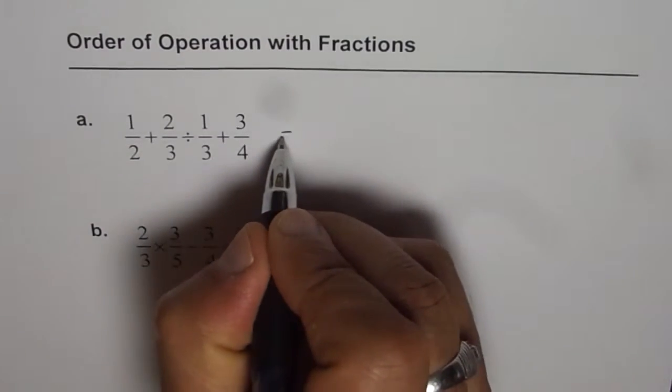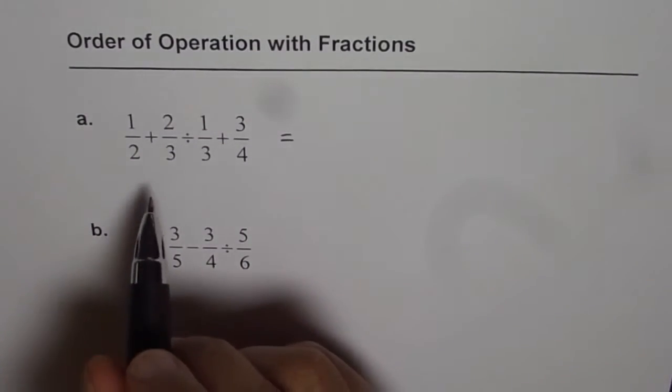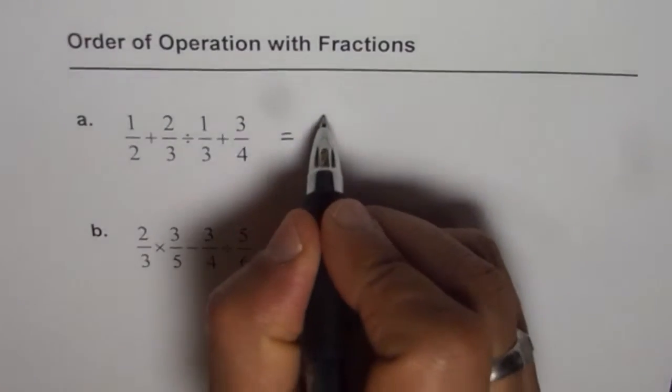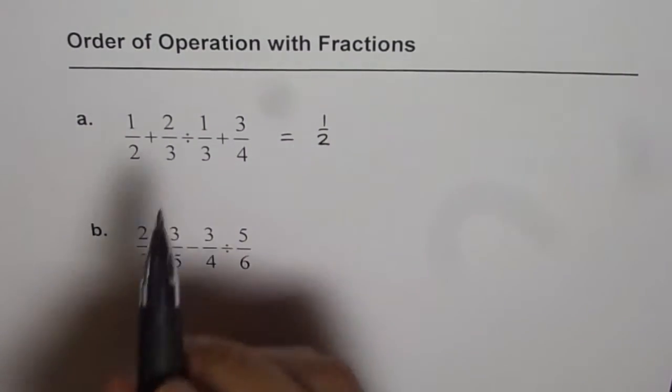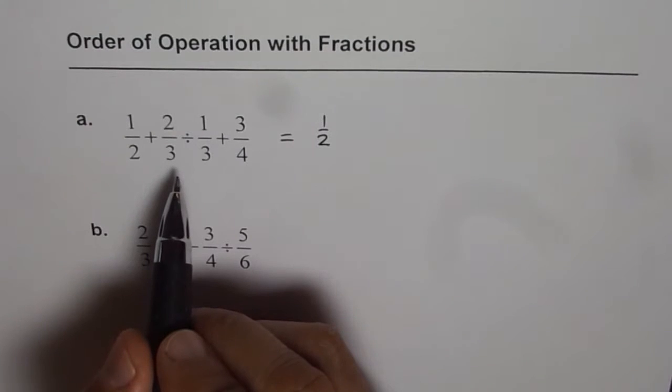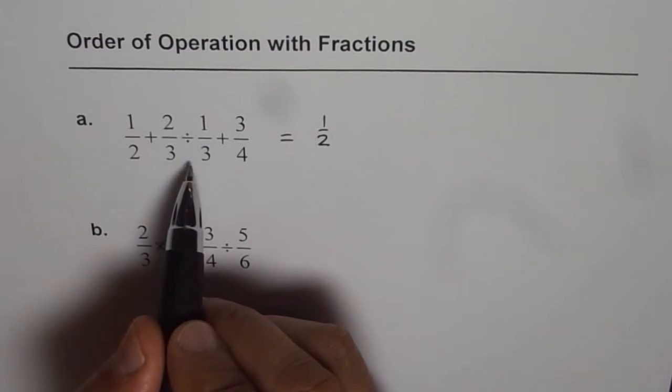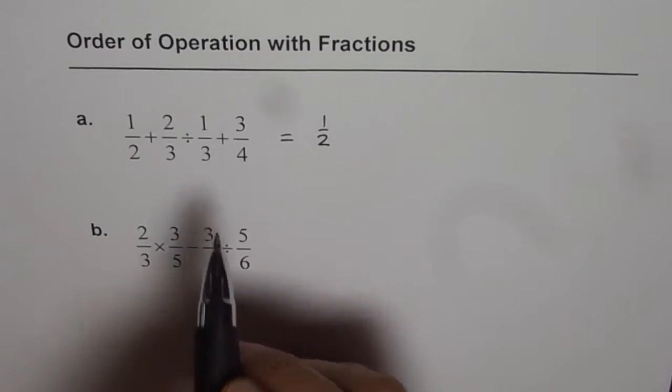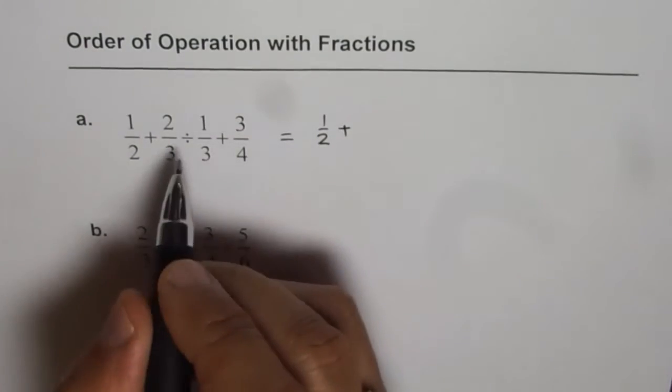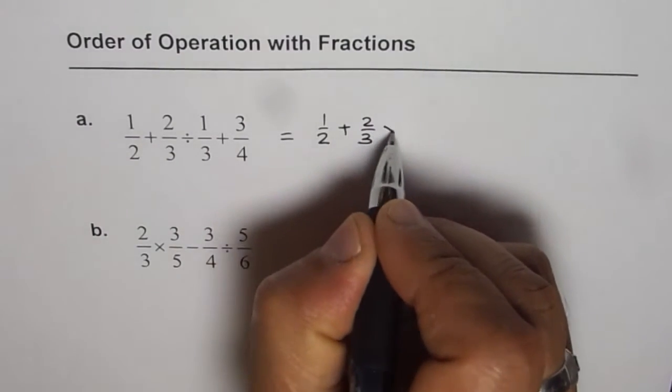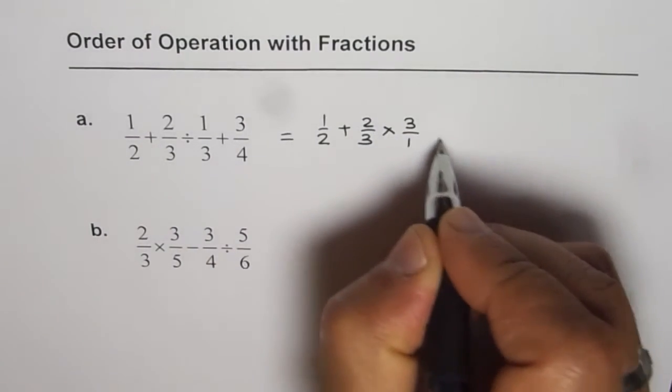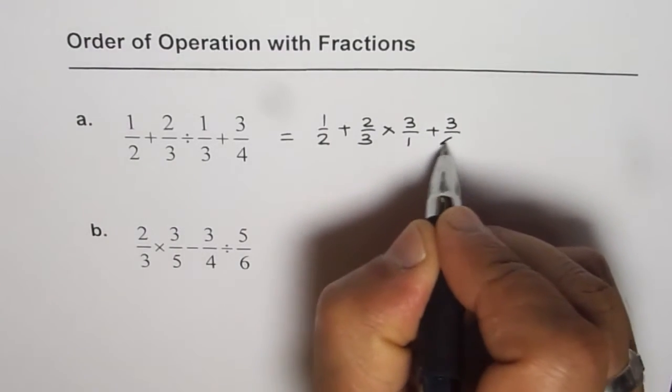We can always rearrange them. So let's rearrange like half. What we will do instead is write division as multiplication, perform the multiple operation in the center and then add all of them. We have half plus we can write this as two over three times three over one plus three over four.